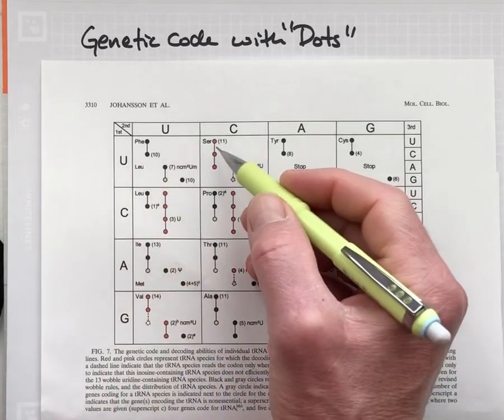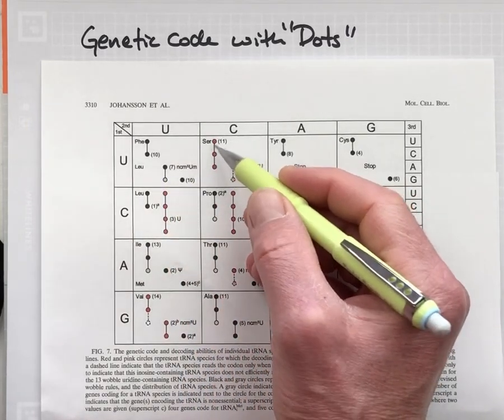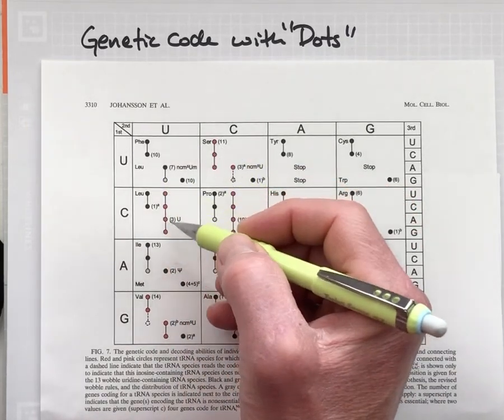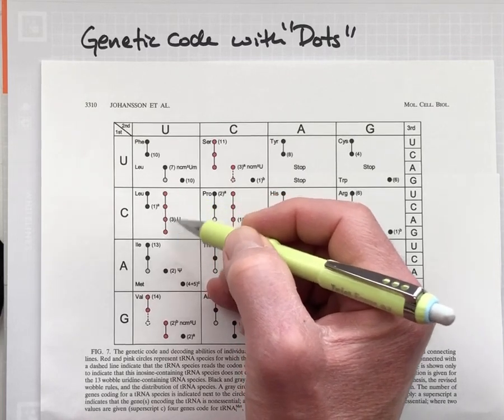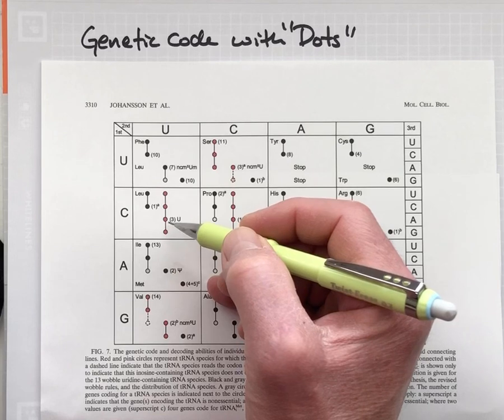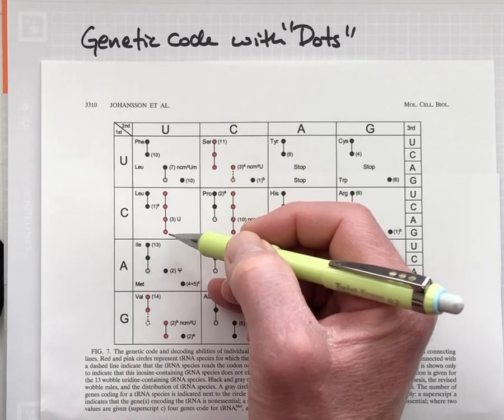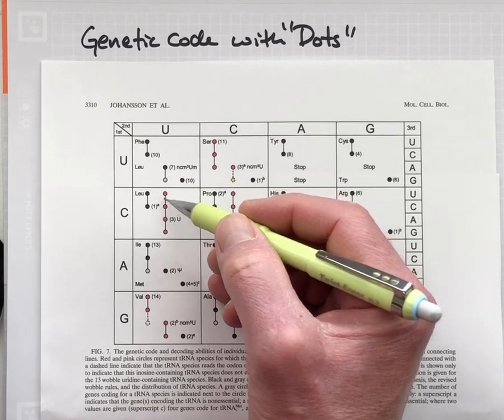Each set of dots that are connected by a set of lines or a string of dots indicates one tRNA, and it shows you which codons that tRNA molecule is able to interpret.